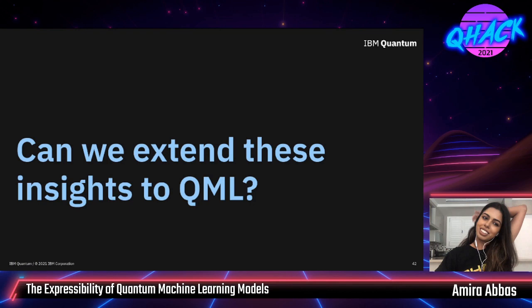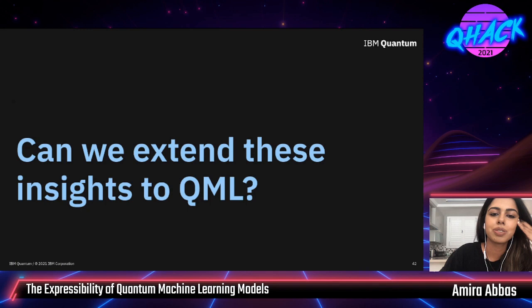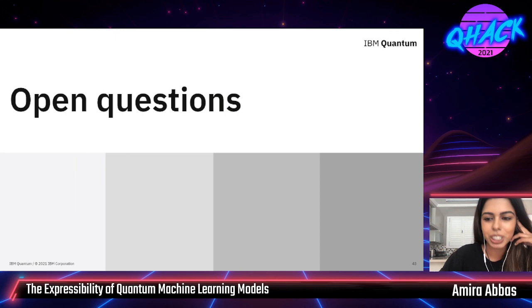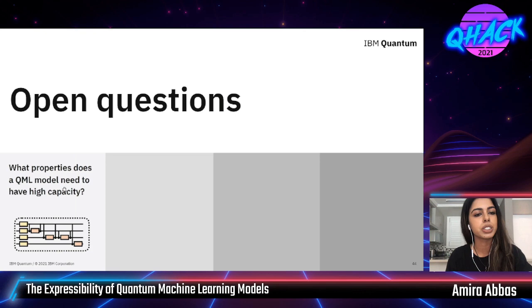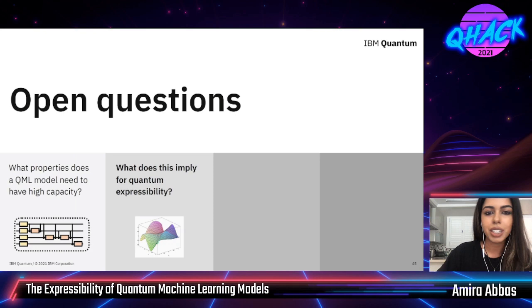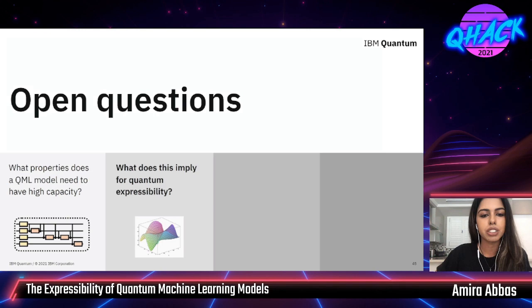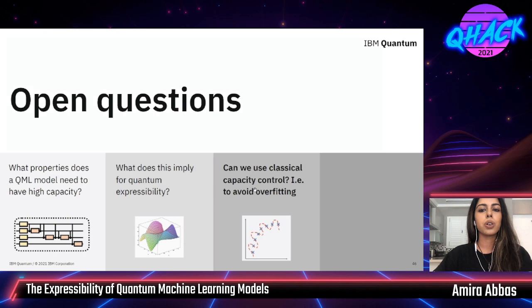I'm almost done. I want to pose the question: can we extend any of these insights into quantum machine learning? Can we borrow from different capacity measures that give us different notions of expressibility, and play around designing quantum models to figure out what's actually useful? Some open questions: what properties do we need in our quantum circuits to design them with high capacity? And once I pick a capacity measure and optimize my quantum model — maybe through a certain feature map — what does the quantum expressibility look like?